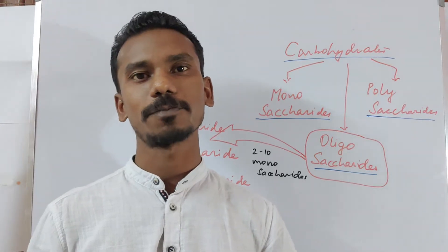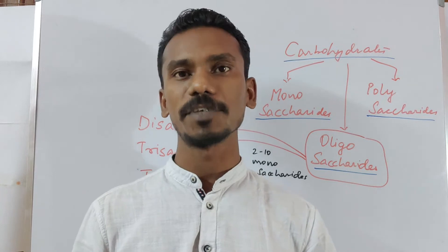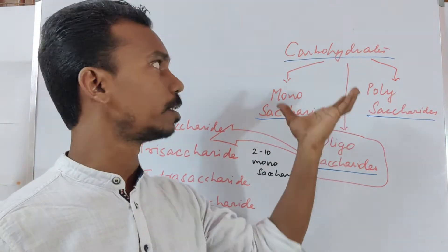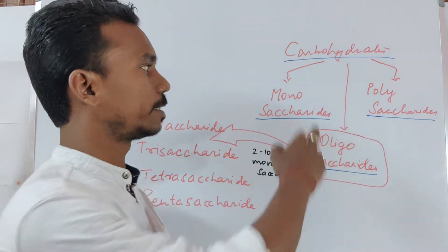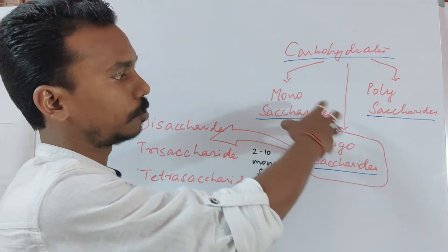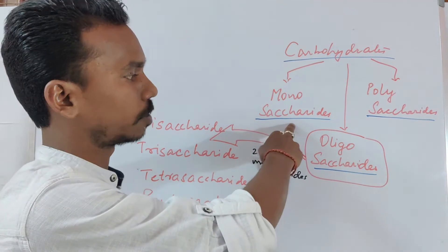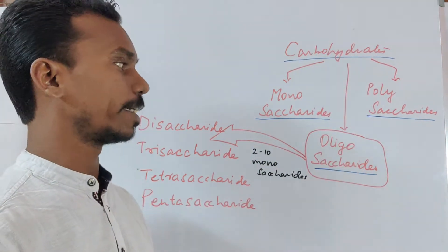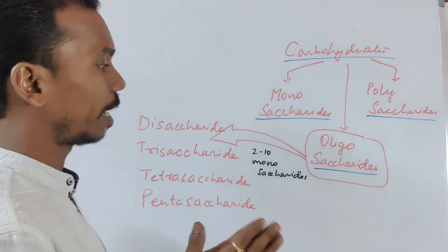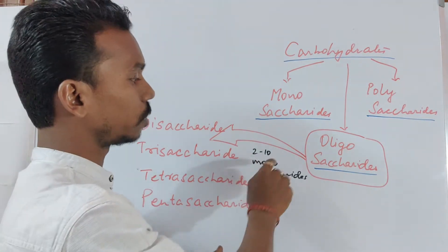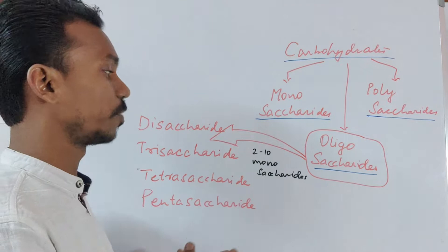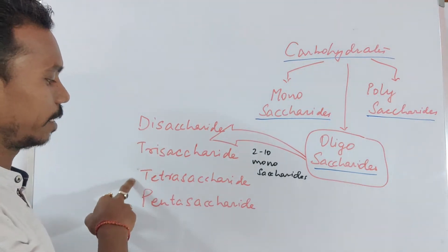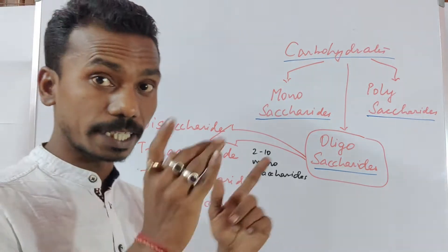Hello, I'm the god Navashkar. Welcome back to my YouTube channel. In the last videos, we already understood the concept of the classification of carbohydrates — carbohydrates are classified into three major forms: monosaccharide, oligosaccharide, and polysaccharide. In the case of oligosaccharide, there must be two to ten monosaccharides, and oligosaccharides can be divided into disaccharide, trisaccharide, tetra, penta, and so on till the tenth.